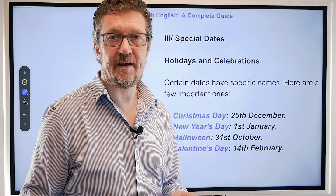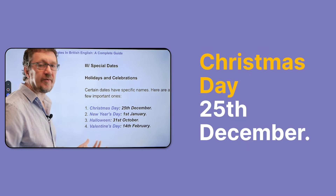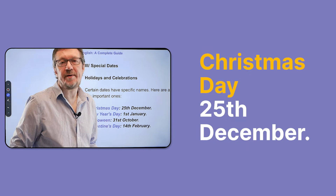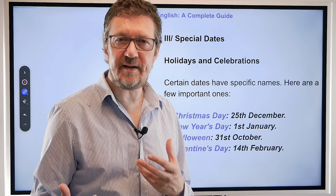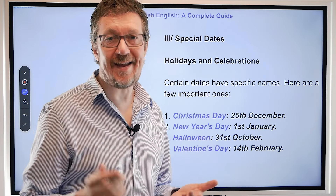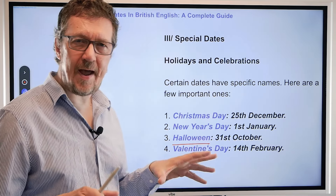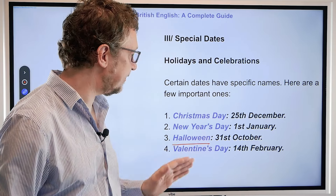There are also special dates in the English language where we use the name of the day rather than the date. Everybody knows what date it is, but you don't say the number. For example, we have Christmas Day — everybody knows that's the 25th of December. And New Year's Day — everybody knows this is the 1st of January. Halloween is on the 31st of October. And Valentine's Day is the 14th of February. When you use your preposition, you still use 'on': 'on Christmas Day', 'on New Year's Day'.